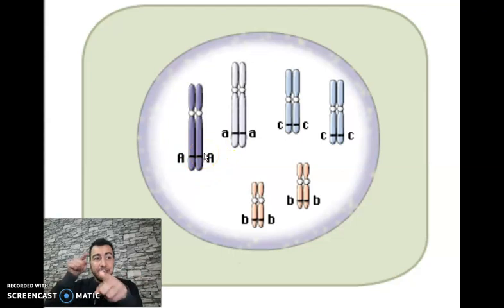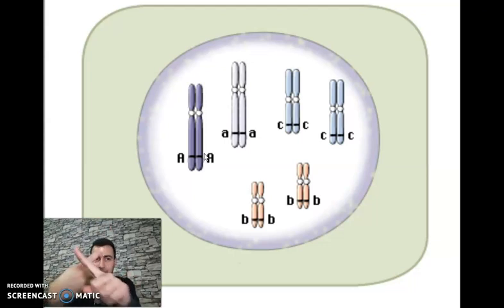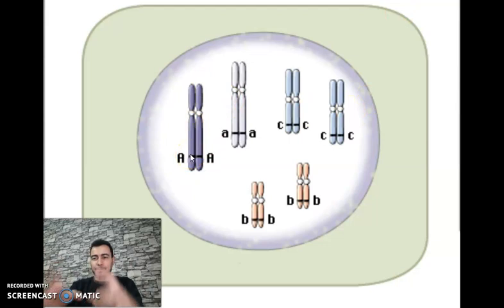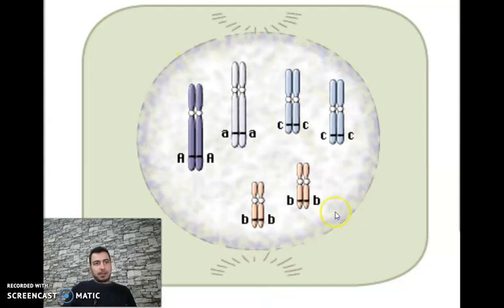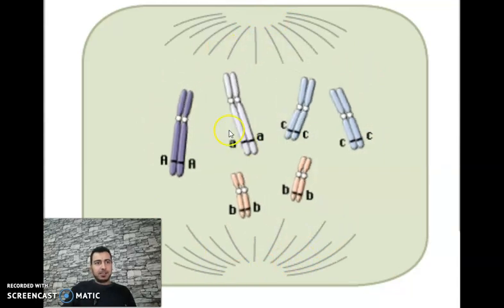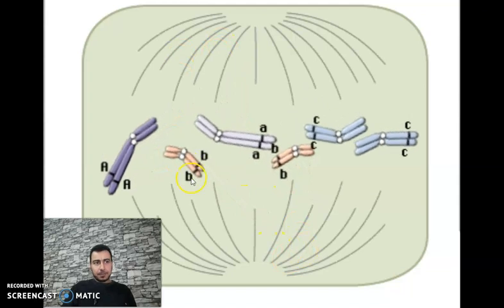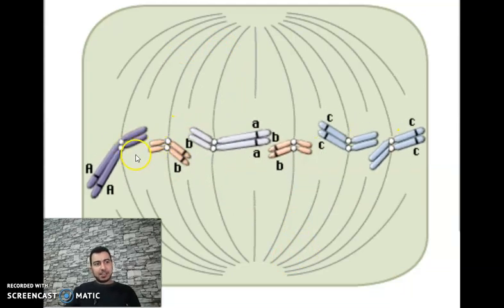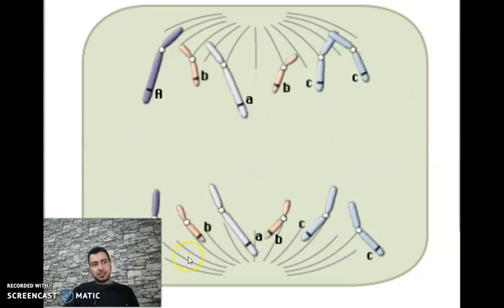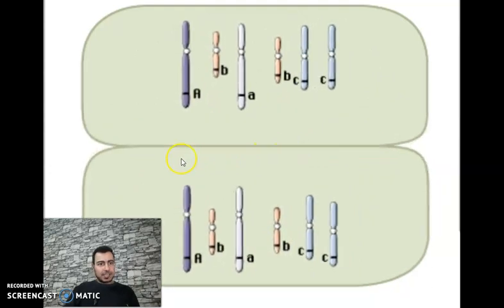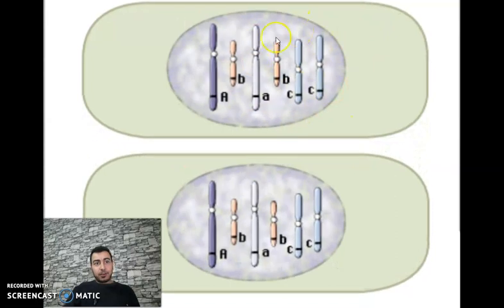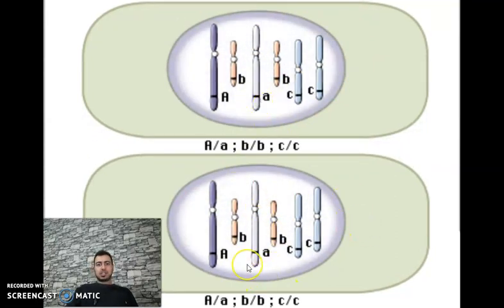The cell is now in G2 — each chromosome is made of two chromatids. Then during prophase, condensation occurs, chromosomes become visible and clear, and the nuclear membrane disappears. Spindle fibers carry chromosomes to arrange them on the equatorial plate at metaphase. Then separation occurs during anaphase. Telophase follows with cleavage and reforming of the nuclear membrane.